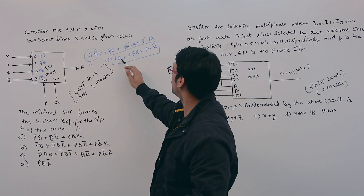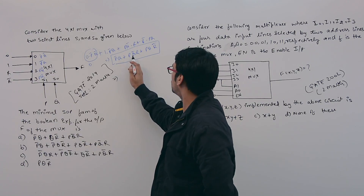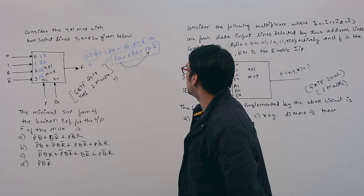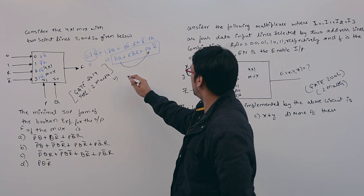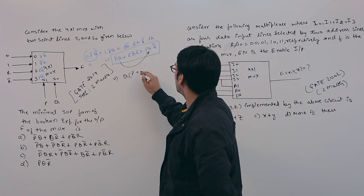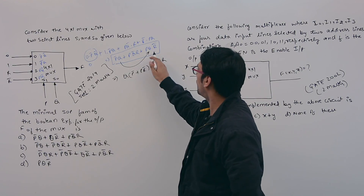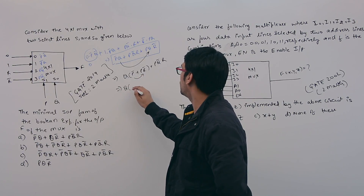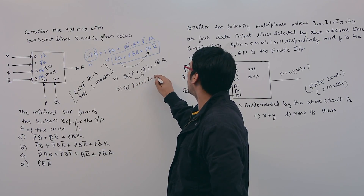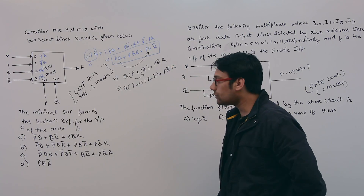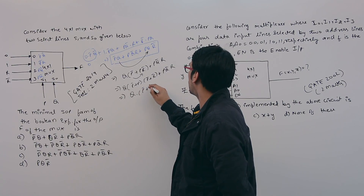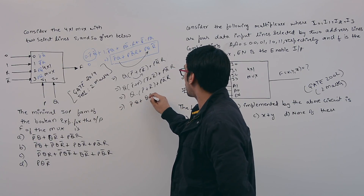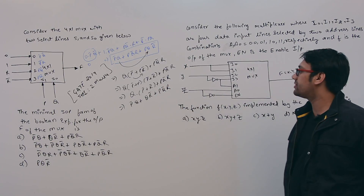Taking Q as common between the appropriate terms, we get: Q(P' + PR') + PQ'R. Distributing P' inside: Q·P' + Q·PR' + PQ'R, which simplifies to P'Q + QR' + PQ'R. This is the minimal SOP expression and cannot be simplified any further.